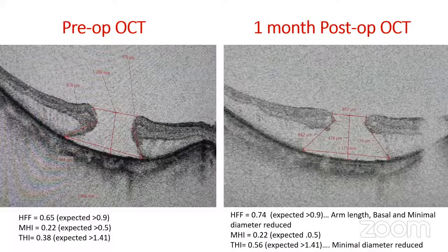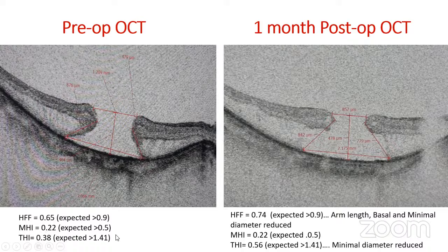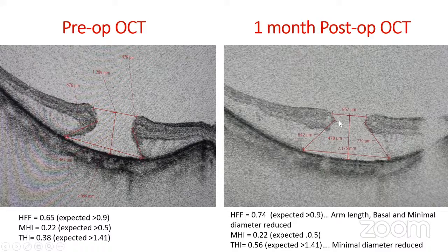In our case, in the pre-op OCT, the hole formation factor was 0.65, but expected for good prognosis is more than 0.9. Post-operatively it improved to 0.74 because the arm length, basal, and minimal diameter reduced, but it was still less than 0.9. Macular hole index was 0.22 and was unchanged. The tractional hole index also improved because the minimal diameter reduced compared to the pre-operative OCT. But still the hole did not close.